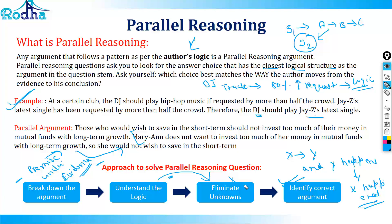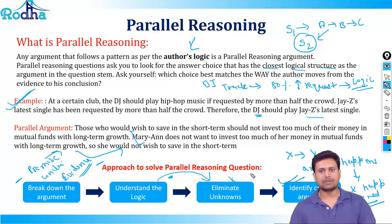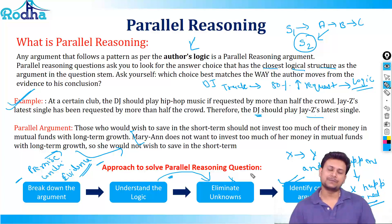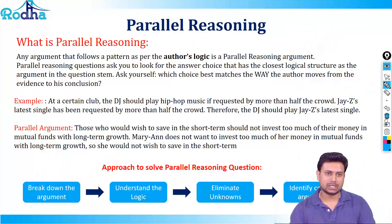In this lecture we covered three things: first, causal arguments and causal assumptions; second, how to resolve paradoxes — paradoxes are essentially flaws in the author's argument, so identify the flaw and resolve it; third, parallel reasoning — break down the argument, understand the logic, and find which option has a similar logic to the one given in the question. I hope this has given you a good starting point for questions around these three topics. Hope to see you in the practice video questions. Thank you.